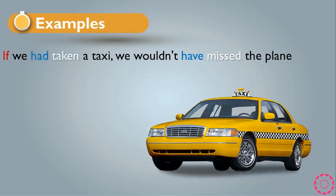Another example: 'If we had taken a taxi, we wouldn't have missed the plane.' This sentence is talking about the past — something that didn't happen — or imagining the result of that thing in the past. So it's saying: if we had taken a taxi in the past, we wouldn't have missed the plane. This is the first rule of the conditional.